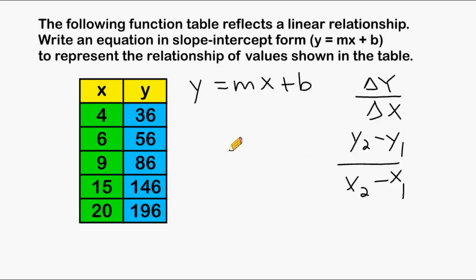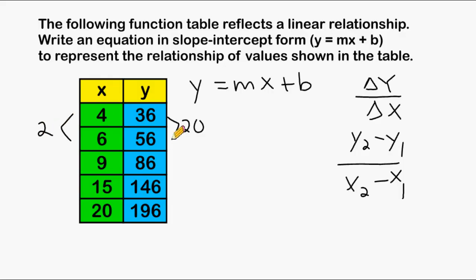Let's figure out the change in our first pair of y values. If we go from 36 to 56, that is an increase of 20. And if we go from 4 to 6, that is an increase of 2. Now if we go from 56 to 86, that is an increase of 30.